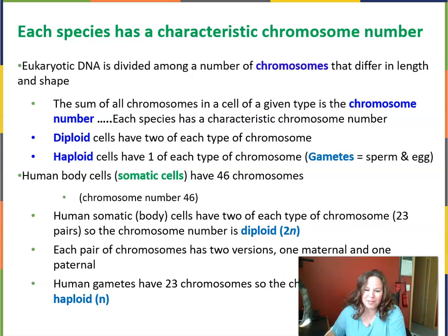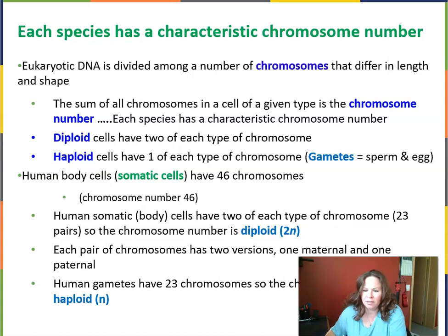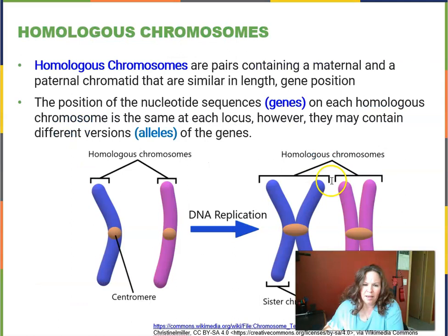Our chromosome number in somatic or diploid cells is 46, described as 2n. The n is our haploid number, which is 23. So 2 times 23 is 46, found in our diploid cells. Our haploid cells only have n, which is 23. Having a chromosome from both mom and dad — a maternal and a paternal chromosome of each type — we call each of those homologous.